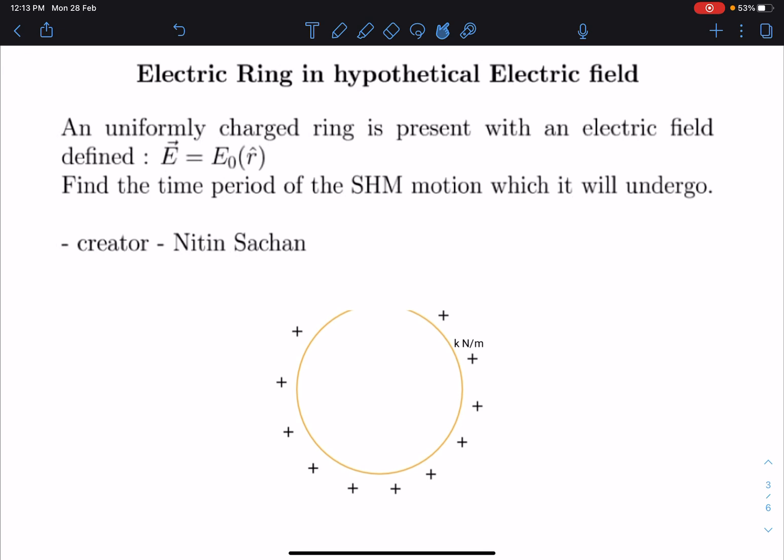Find the time period of oscillation they are asking. So this field is radial field E₀r̂ and it will undergo SHM. Let's try to understand what kind of SHM motion it will perform.